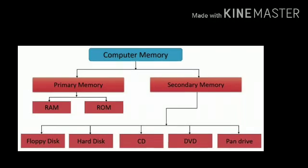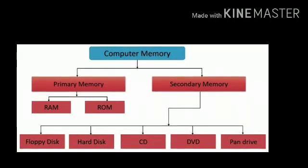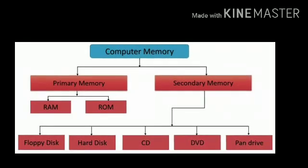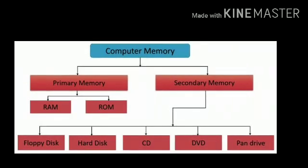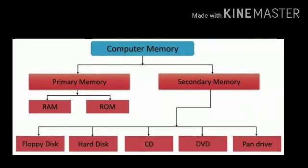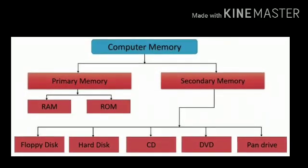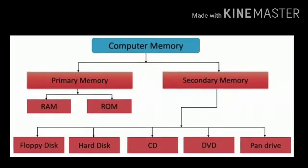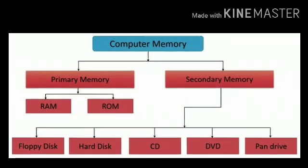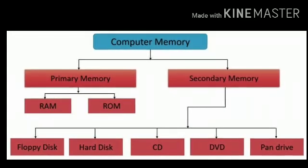As you can see in the picture, primary memory and secondary memory. Primary memory is again classified into two parts: RAM and ROM. And secondary memory has many kinds like floppy disk, hard disk, CD, DVD and pen drive. We will discuss primary memory and secondary memory in detail and learn what is RAM and what is ROM.